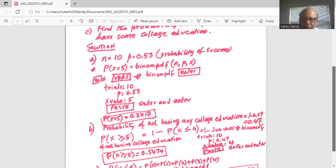And x value is four, not five, four. Because we want greater than or equal to five, so we stop. We add only from zero through four. That's why we are using binom CDF.